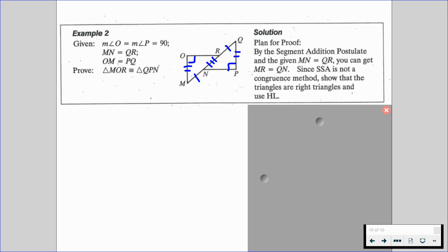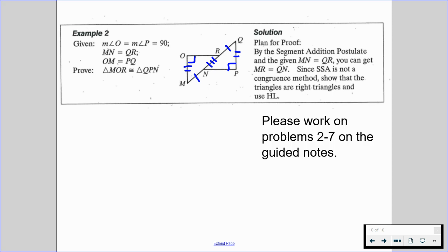we're going to be able to say that we're going to have a hypotenuse there because we have a right angle, and then we can use HL for that congruent triangle, knowing that again, we added MN and NR to get MR, we added QR and RN to get QN, and there we have hypotenuse and leg. All right, kiddos, please work on problems 2 through 7 on the guided notes. Keep making yourself proud. Let us know if you have any questions. Talk to you soon.